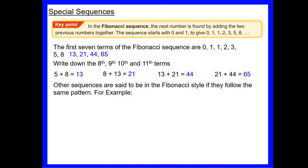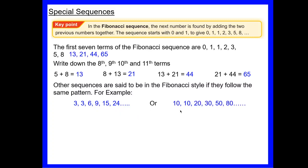Other sequences are said to be in the Fibonacci style if they follow that same pattern of adding the previous two numbers to get the next. For example, starting with 3 and 3: 3 + 3 = 6, 3 + 6 = 9, 6 + 9 = 15, 9 + 15 = 24. Or starting with 10 and 10: 10 + 10 = 20, 10 + 20 = 30, 20 + 30 = 50, 30 + 50 = 80. Any sequence following that pattern is Fibonacci style.